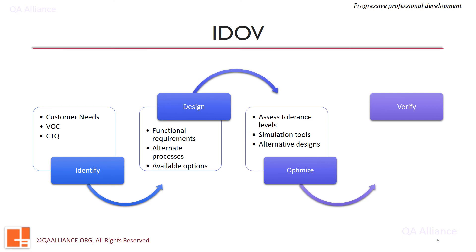The last phase is the Verify or Validate phase. In this phase, testing and validation is done for the selected design. Prototypes are built to validate the design. Failure modes, reliability and risk analysis, and performance assessment of the prototype are conducted, and changes are made if required.